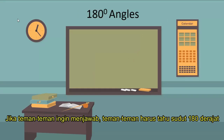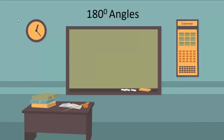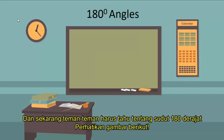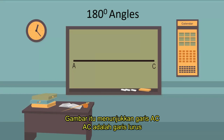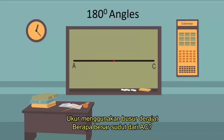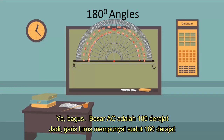To answer this problem, you must know about 180-degree angles. Yesterday you studied about full rotation, and the shape of a full rotation is circular. Now you must know about the 180-degree angle. Look at line AB — AB is a straight line. Let's measure how many degrees AB is. That's right, AB is 180 degrees. So a straight line is a 180-degree angle.